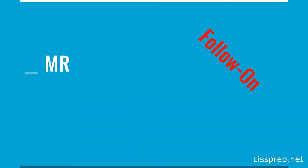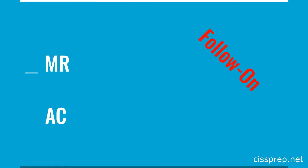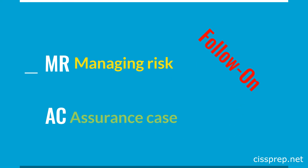The follow-on phase has really only one activity, but we'll use MR and AC together to remember what happens. The PC is mad at us for my repaired air conditioning — but we're going to add the prefix un, so: the PC is mad at us for our unrepaired air conditioning. The MR stands for managing risks, and the AC stands for analyzing the assurance case — a term you may see on the exam.